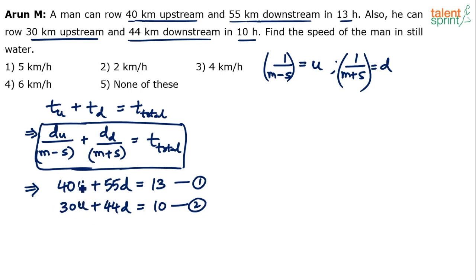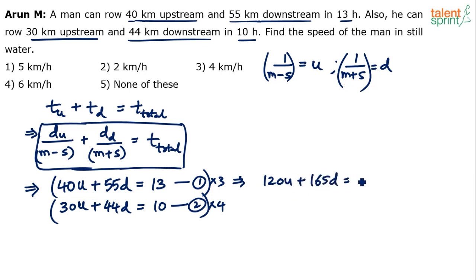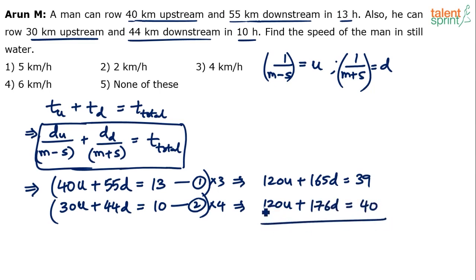To eliminate u, multiply equation 1 by 3 and equation 2 by 4. That gives 120u + 165d = 39 and 120u + 176d = 40. Subtracting the first from the second: 120u cancels, and 176d − 165d = 11d = 40 − 39 = 1, so d = 1/11.